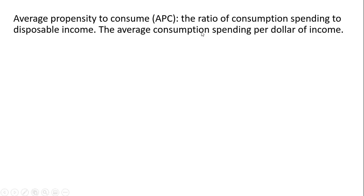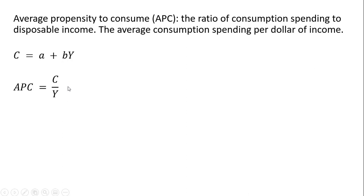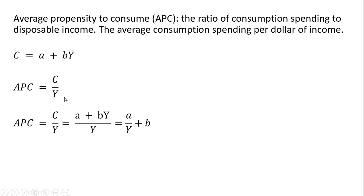The average propensity to consume is the ratio of consumption spending to disposable income — the average consumption spending per dollar of income. With consumption function C equals A plus B times Y, the average propensity to consume is C divided by Y — not the change in C over the change in Y, just C divided by Y. Substituting in for C gives us: APC equals A divided by Y plus the marginal propensity to consume.